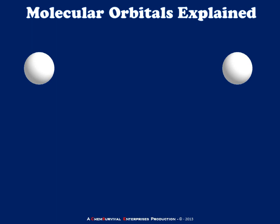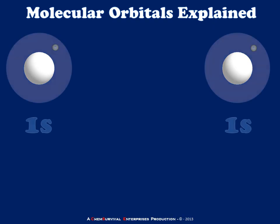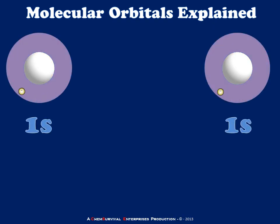Welcome everyone. This is Professor Davis again, back to talk to you this time about molecular orbitals. I'd like to begin this discussion by considering two individual hydrogen atoms, which are depicted here as white spheres. We already know from our discussions on atomic structure that each of these hydrogen atoms should have a 1s subshell containing a single electron.